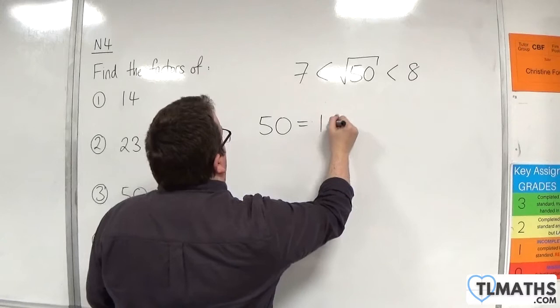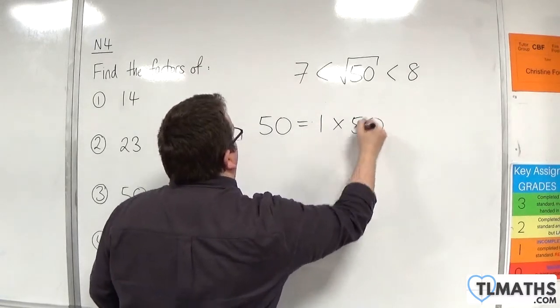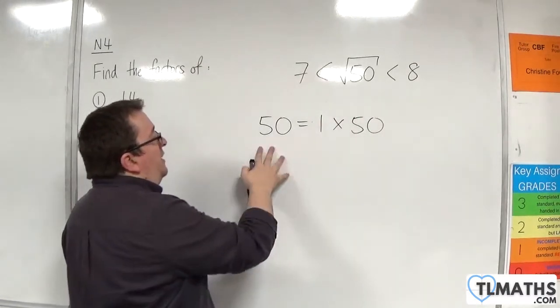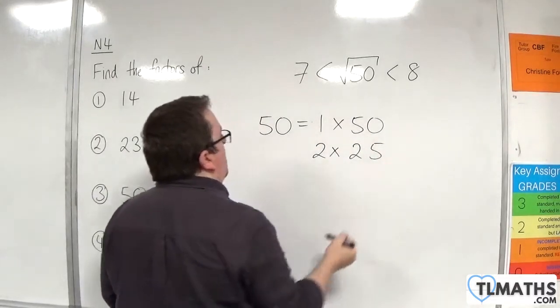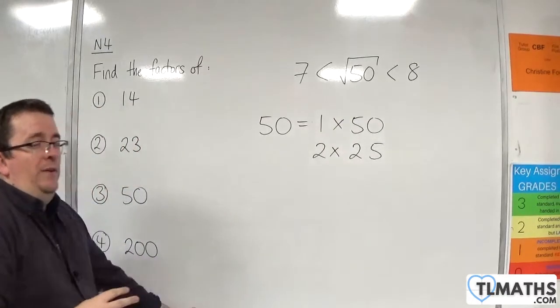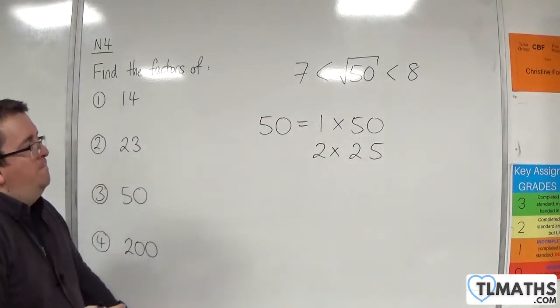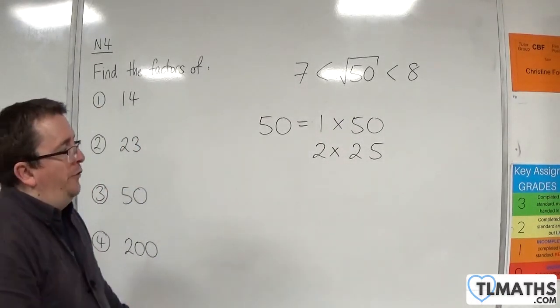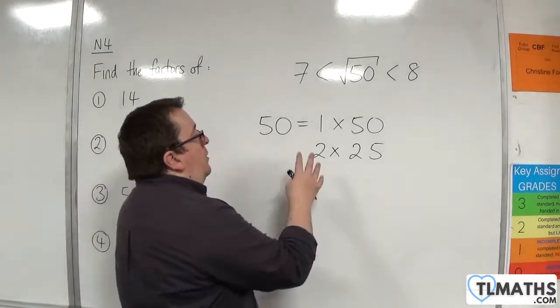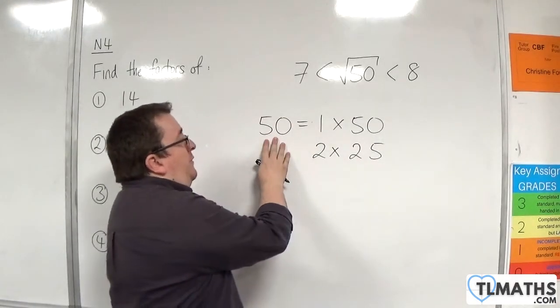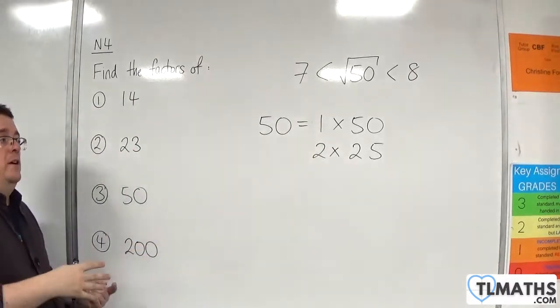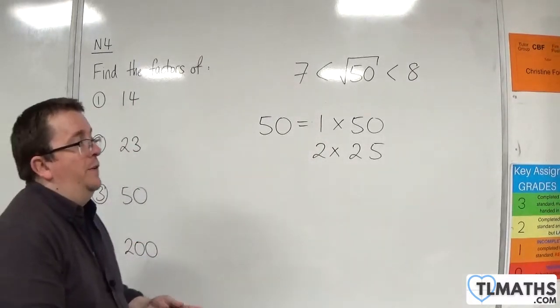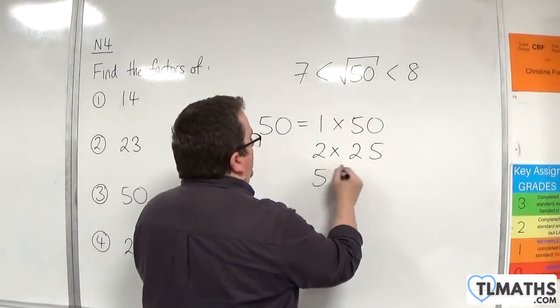So, 50 is 1 times 50. 2's going to go into 50, because it's even. So, 2 times 25. 3 doesn't go into 50, unfortunately. And 4's not going to go into 50, because 2 goes into 50 25 times. So, if we divide 25 by 2, we get 12.5. 4 lots of 12.5 is 50, so that's no good.